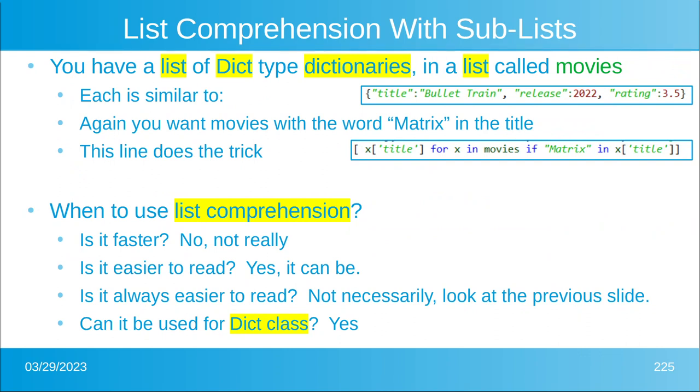So let's do a list comprehension that has sublists. That sounds even more fancy. So let's suppose you have a list of dictionaries. The list is called movies, but each dictionary doesn't just have the title. It also has the release date and the rating from Rotten Tomatoes or whatever. And again, you want the movies that have the word matrix on the title. Well, each element now is a dictionary, so you need to access what's inside the dictionary. So in our example, it would be x with the brackets and then title because that's what the key is called. So we would want x title for x in movies if matrix is in x title.